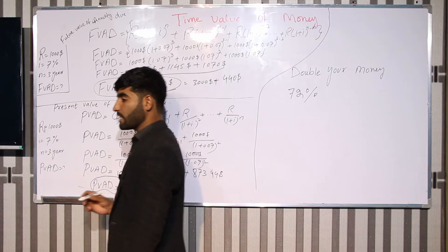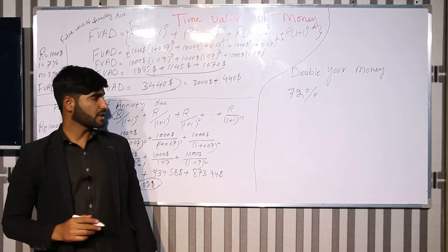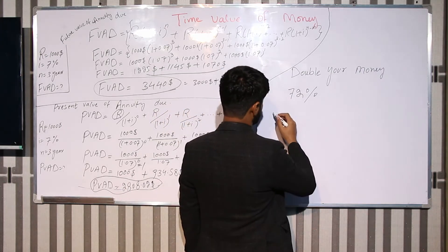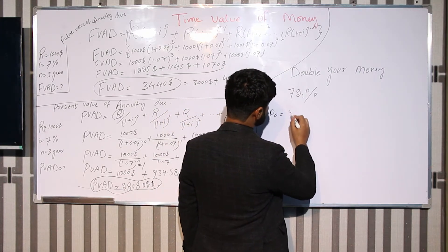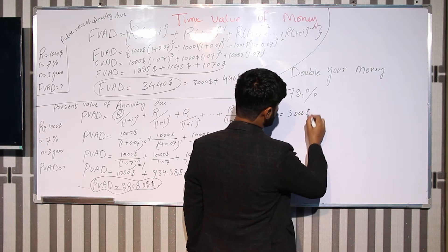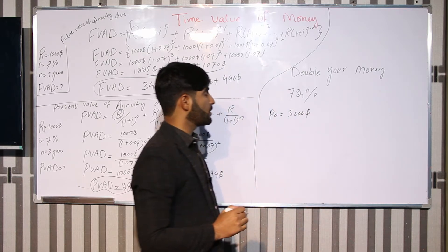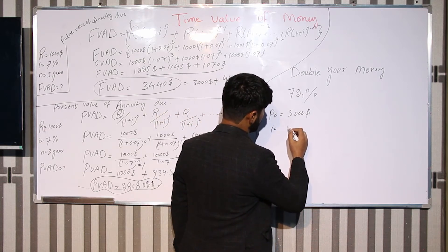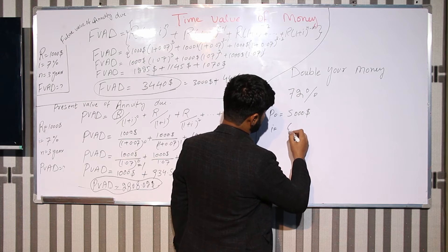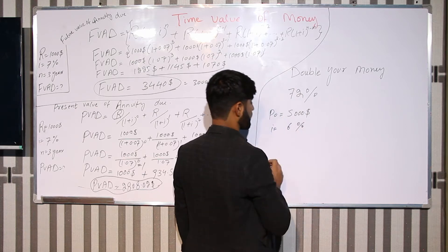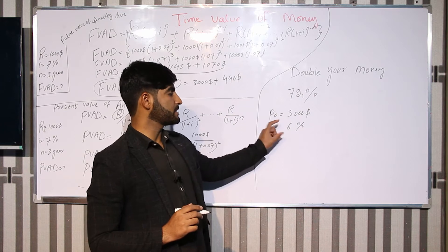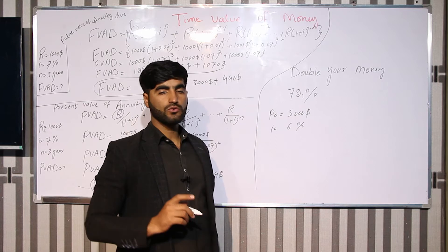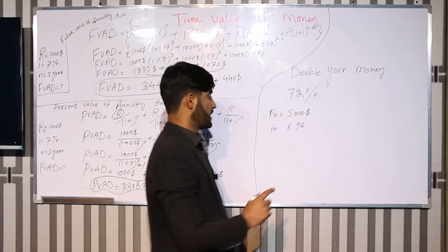In the Rule of 72, you will learn how to double your money. For example, the principal amount is $50,000 and the interest rate is 6%.